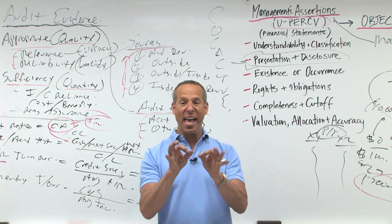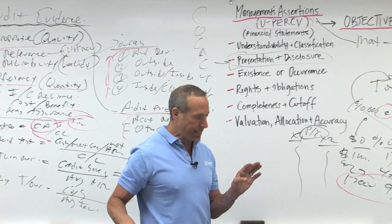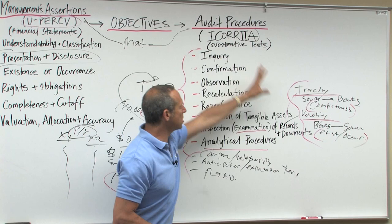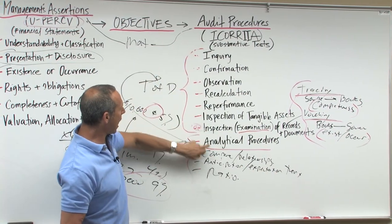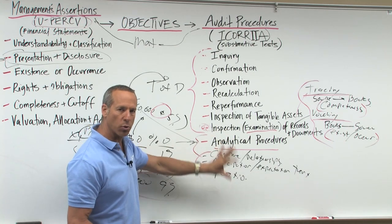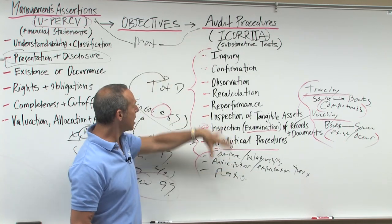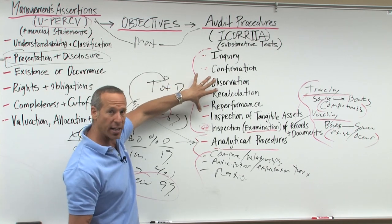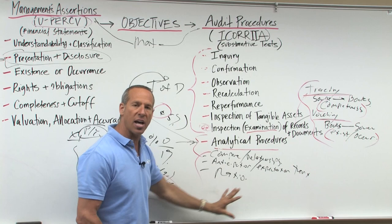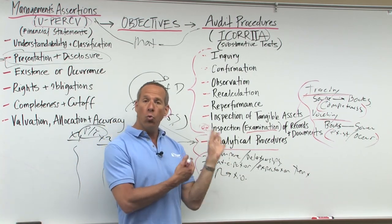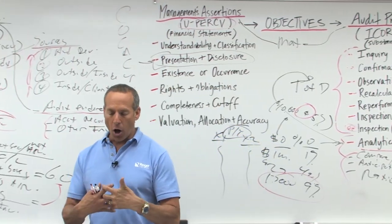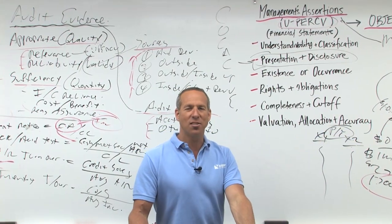What is this talking about? Analytical procedures. To keep it in perspective: these are the audit procedures, these are the substantive tests. We've talked about ICORIA — there's your A — analytical procedures: the study of data comparisons and relationships. This is one of your different tests, alongside test of details of accounts, transactions, balances, and disclosures. It's important that you understand all of these and see how they all tie together.